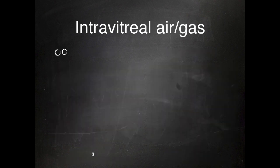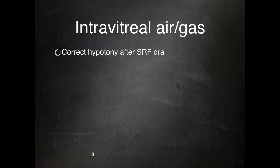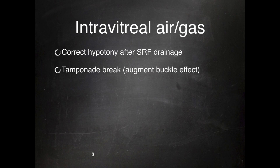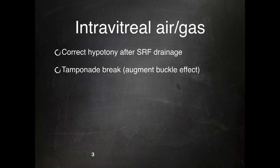It's important, if you're considering drainage, to have intravitreal air or gas ready to correct the hypotony after subretinal fluid drainage. The use of air or gas could also have a tamponade effect, augmenting the buckle effect.